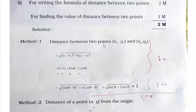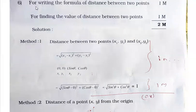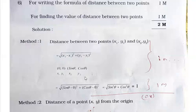From Chapter 7, Coordinate Geometry: simply for writing the distance formula you get one mark. Writing the formula for the distance between two points is one mark, and finding the value of the distance between two points is one mark. Sometimes students don't know how to find the full answer but know the formula — in that situation they will still get one mark for writing the formula.